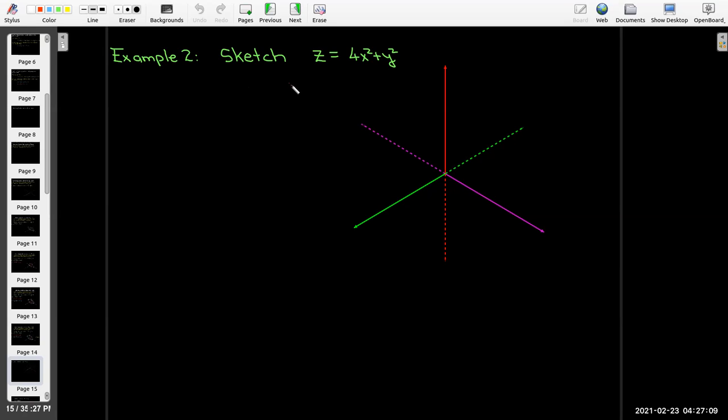So let's try sketching a couple more. Well, when I say let's, let me try to sketch a couple more. And these are the most common ones. And they're actually, honestly, some of the easiest ones to sketch. So z = 4x² + y².